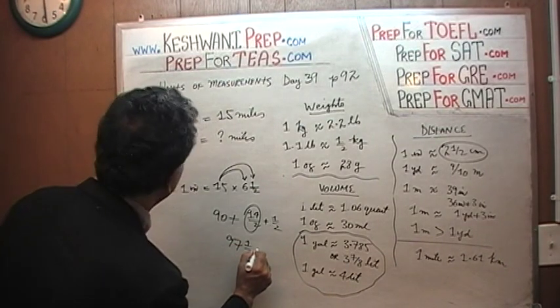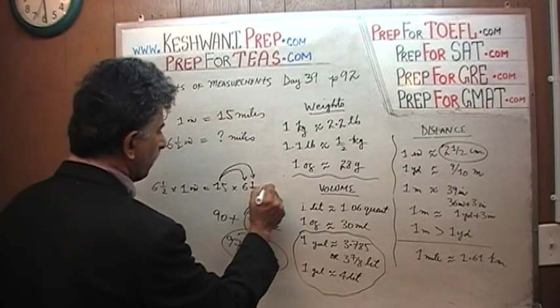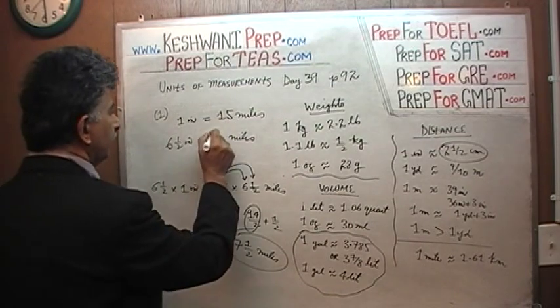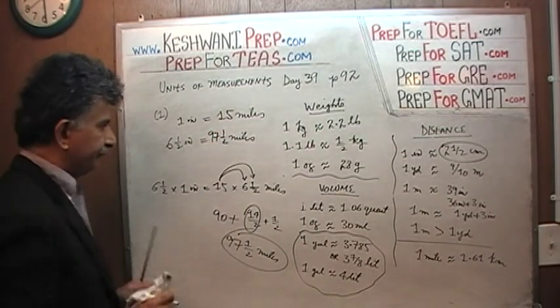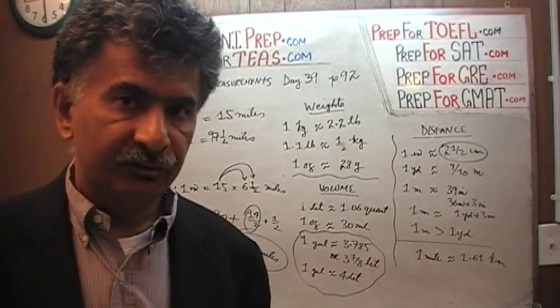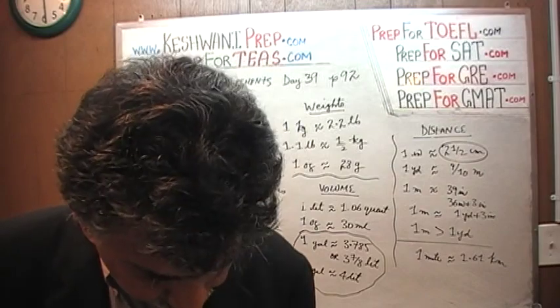97 and a half miles. So the answer is 97 and a half. 6 and a half inches on the map actually represents a distance of 97 and a half miles.